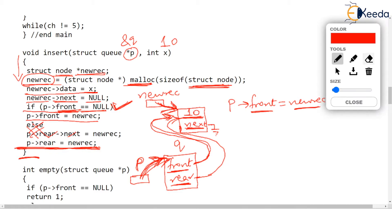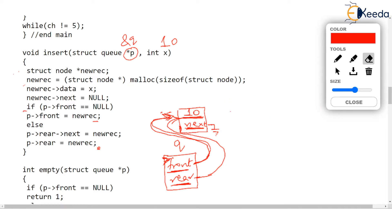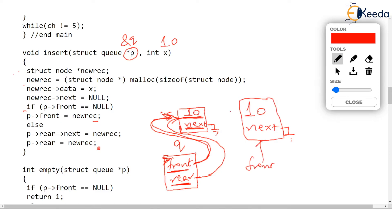After the function finishes, some cleanup work is done. C will delete the variables created for the function: new_rec was created inside the function so it is deleted, and P was a parameter so it is also deleted. We now have a perfect queue with only one value — 10. There is no follower so next of 10 is null. In this queue of one person, front points to 10 and rear also points to 10 — 10 is both the front-most and rear-most.